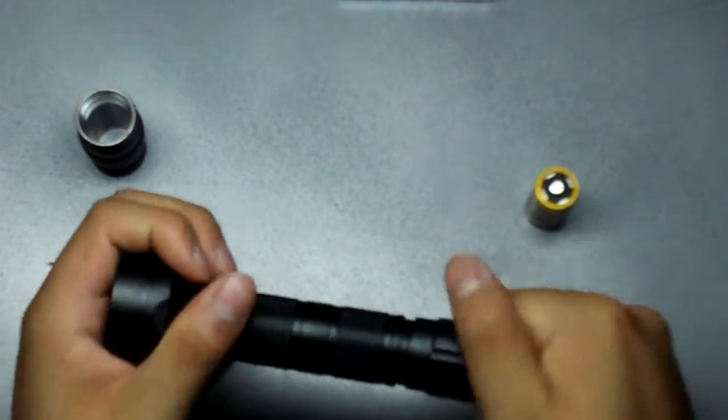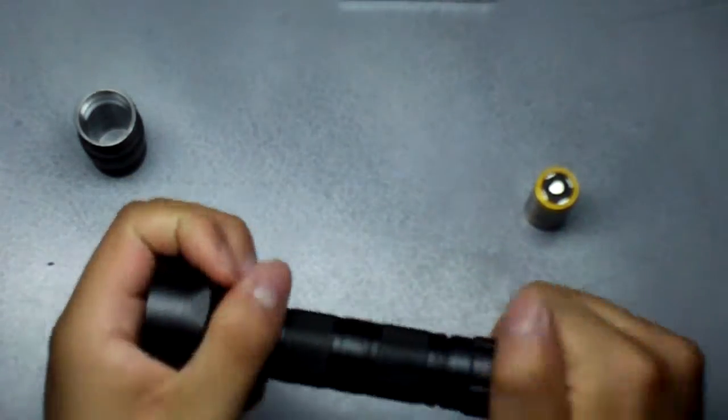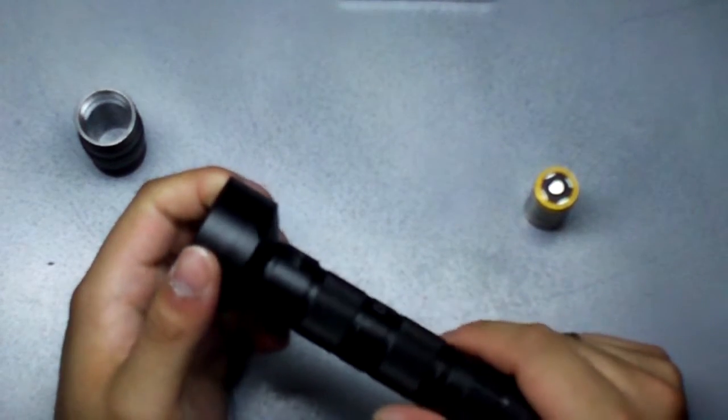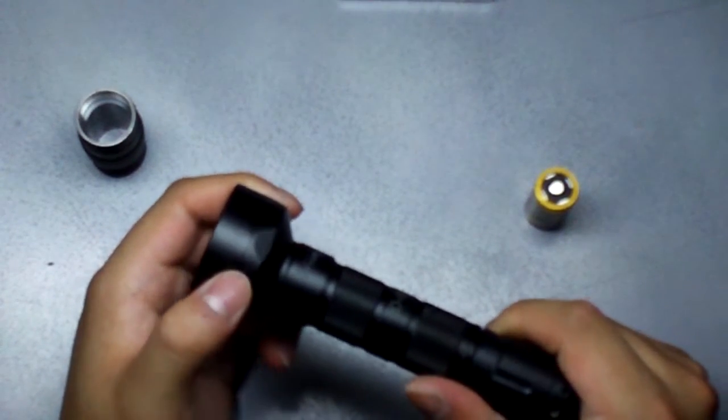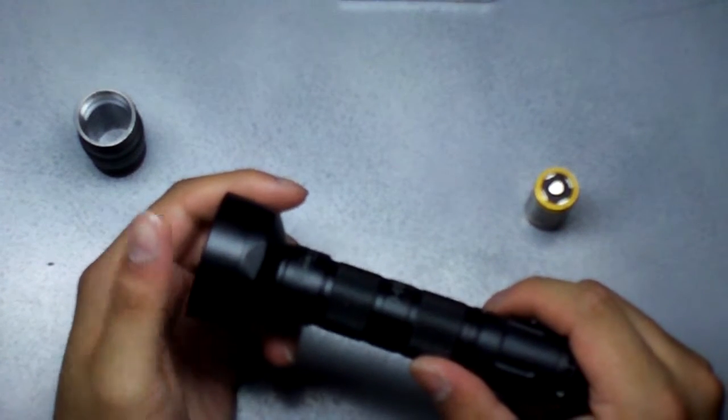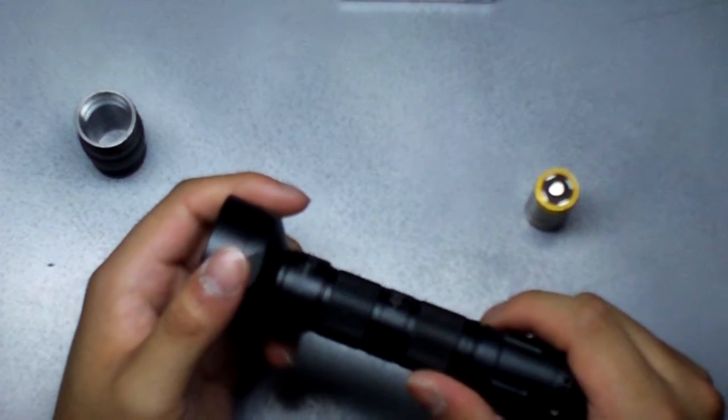With this reflector, it's orange peel textured and it's big. And this light puts out an amazing amount of flood. Like, it just lights up a whole area. It has a good hot spot, but the spill alone also has plenty of light to it.